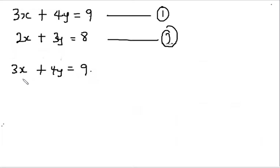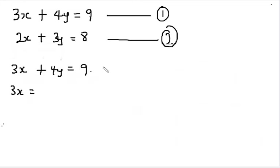From here, we make a variable the subject of the formula. We can choose to make x or y the subject. Let's choose to make x. So we have 3x is equal to 9 minus 4y, by moving 4y to the other side.